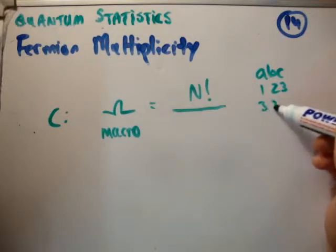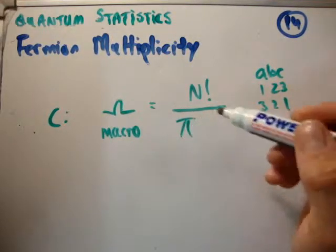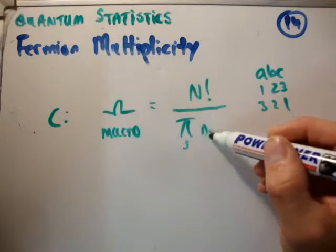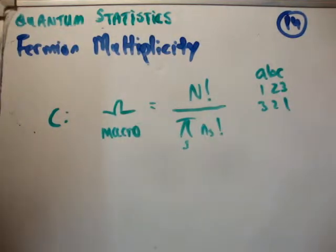We could choose them in different ways and yet get the same state. So what we had to do is we had to divide by these n_s factorials. That was the macroscopic description.